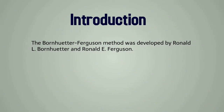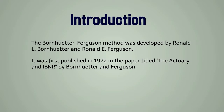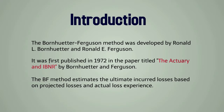The Bornhuter-Ferguson Method was developed by Ronald L. Bornhuter and Ronald E. Ferguson. It was first published in 1972 in the paper titled 'The Actuary and IBNR' by Bornhuter and Ferguson. This method estimates the ultimate incurred losses based on projected losses and actual loss experience.